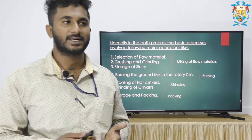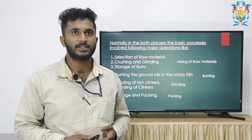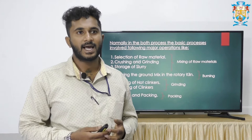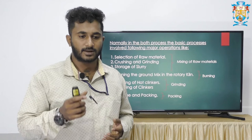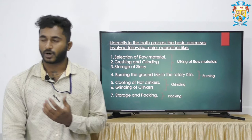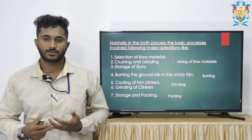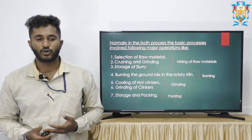Normally, for both processes — wet or dry — there are certain major operations: selection of raw materials in proper proportional quantity and fine powdered form; crushing and grinding, where the raw material is made into a pulverized powdered form; and storage of slurry. These three steps come under the mixing of raw materials. Next is burning the ground mix in the rotary kiln.